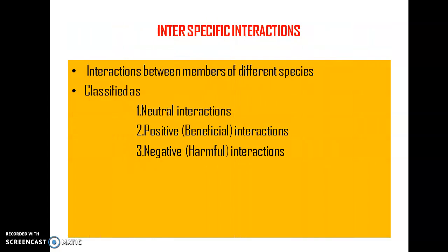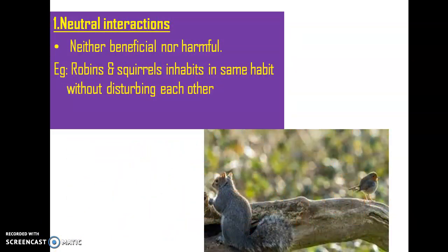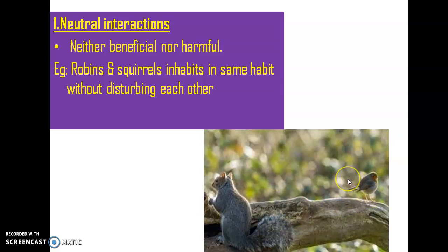Interspecific interaction involves the interaction between different species. These interactions are classified into three categories: neutral interaction, positive or beneficial interaction, and negative or harmful interaction. Neutral interaction, as the name indicates, involves interaction in which neither species is benefited nor harmed. For example, a squirrel and a robin bird may interact for the same resources — even though they are utilizing the same tree, they do not disturb each other. This is called a neutral interaction — not beneficial, not harmful.